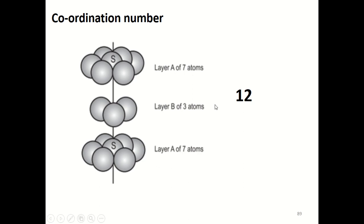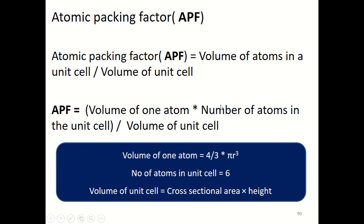Now let us move on to the atomic packing factor. The atomic packing factor is the volume of atoms in a unit cell divided by the volume of the unit cell, which can be expressed as: volume of one atom times effective number of atoms, all divided by the volume of the unit cell. Volume of one atom is four-thirds pi r-cubed, and the effective number of atoms is six. So the numerator is four-thirds pi r-cubed times six.